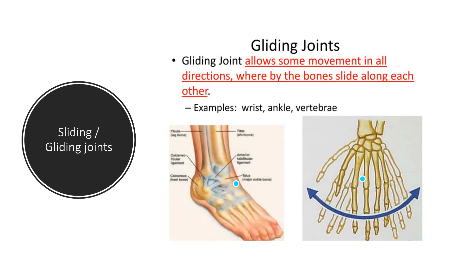The gliding joint is very much what it says — if you open and close your fingers or spread apart your toes, this allows some movement of bones in your hands and feet. Examples of where gliding joints are found include the wrist, ankle, and vertebrae.